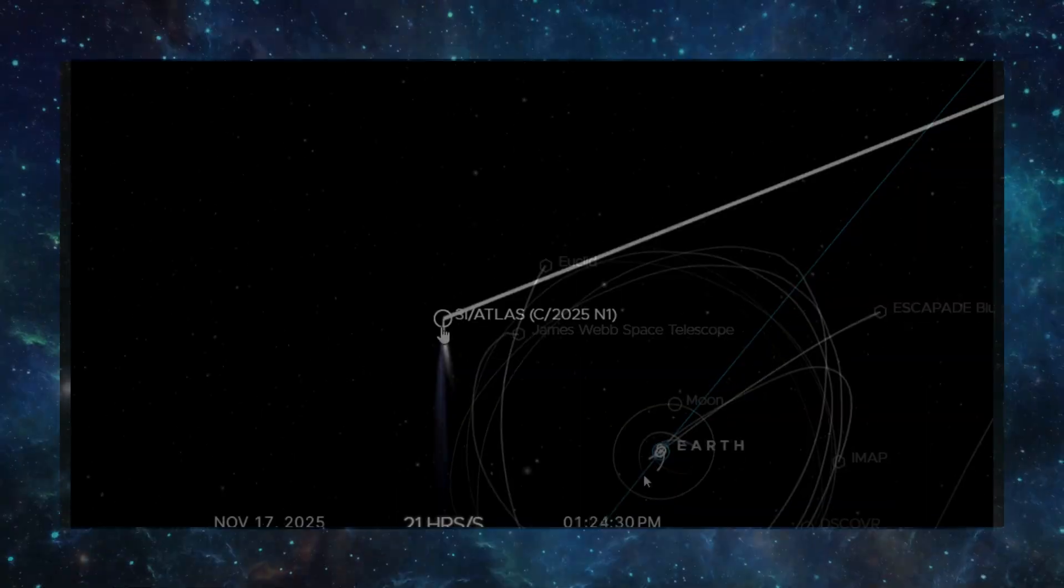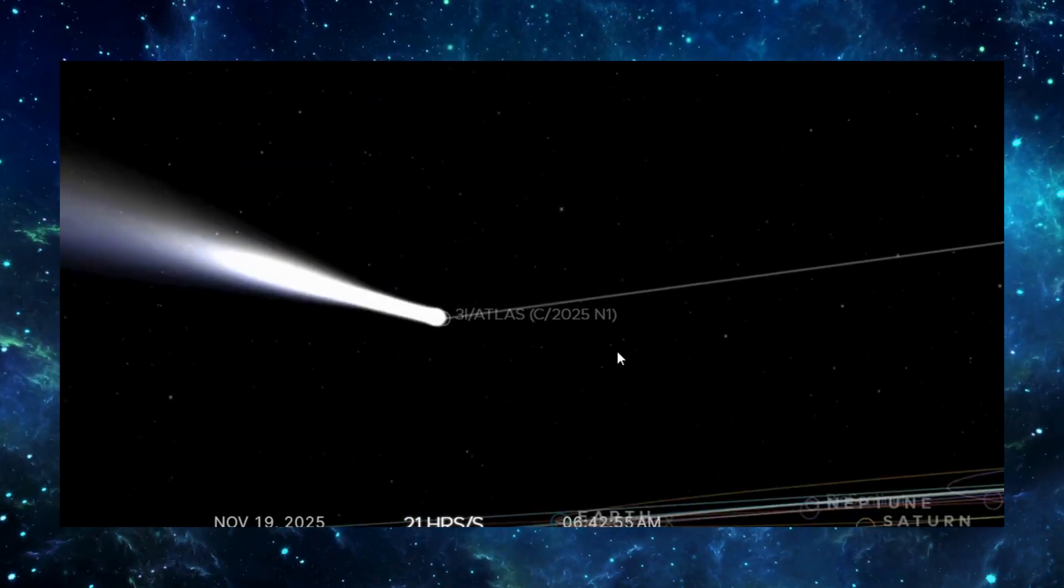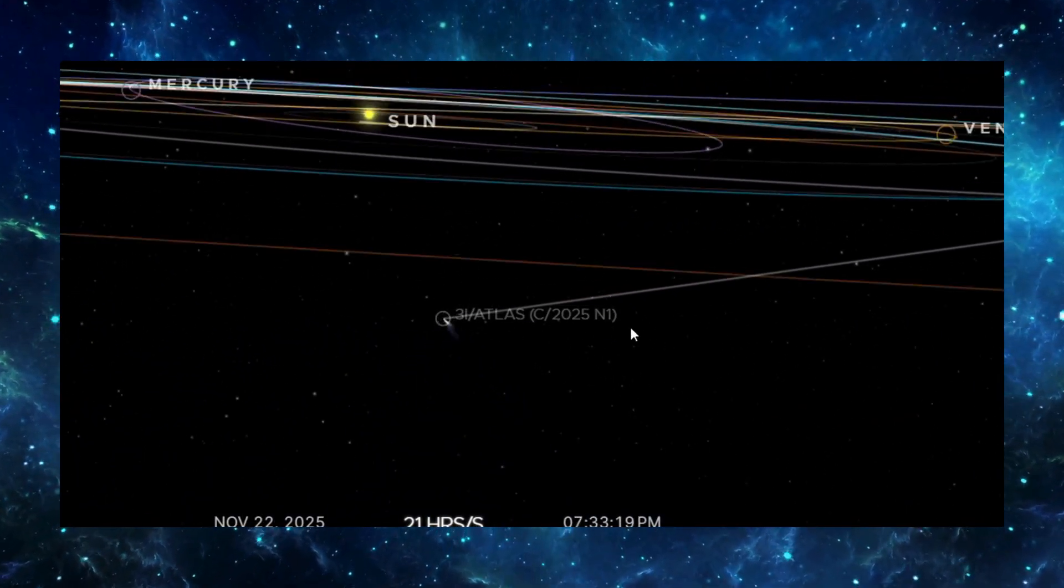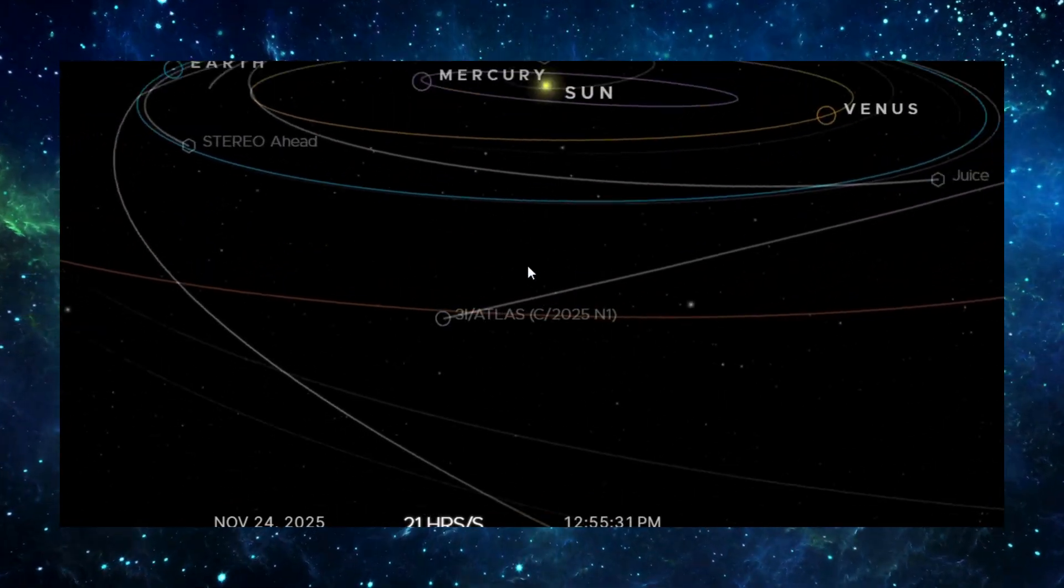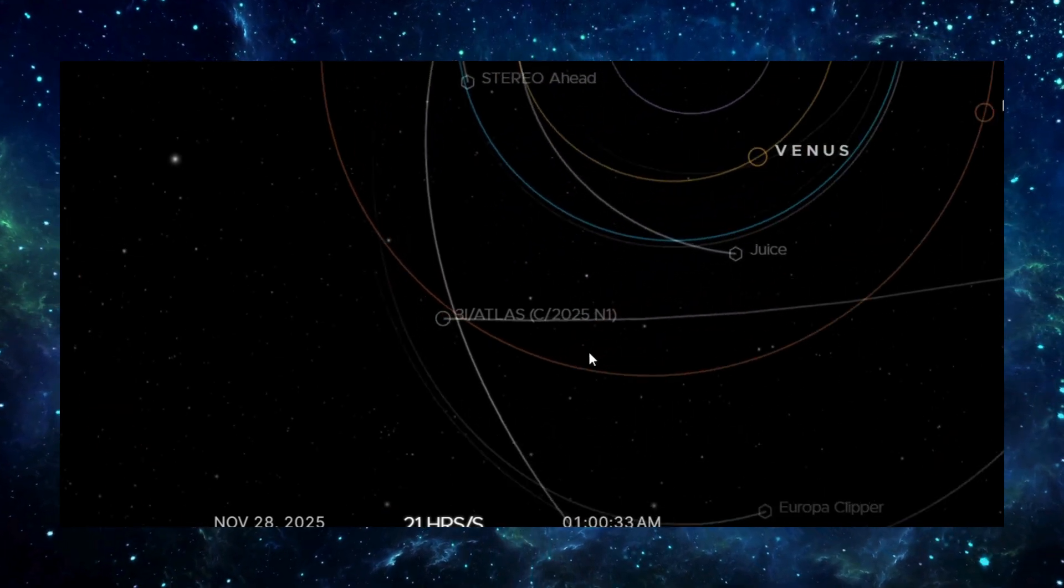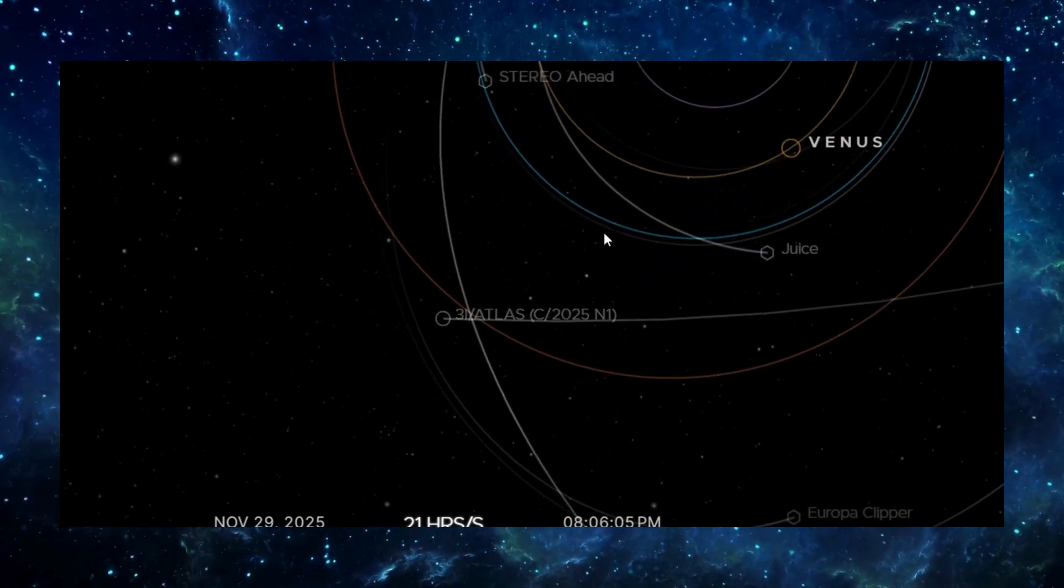Explanation number one: Our calculations are wrong. Maybe the math is off. Maybe the trajectory will shift when more observations come in. Maybe some minor gravitational influence hasn't been properly modeled. But here's the problem.